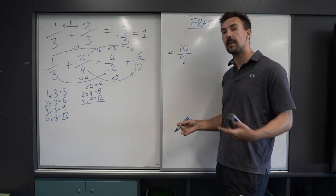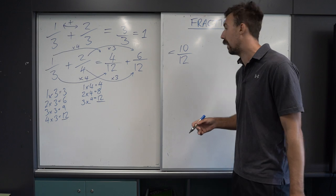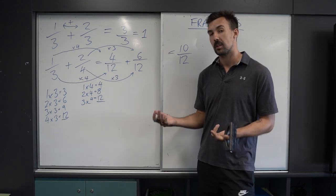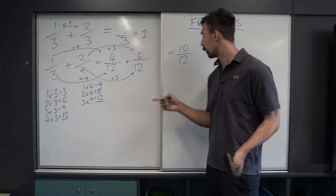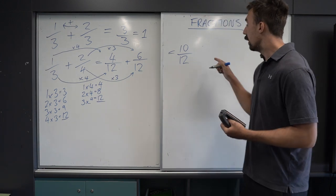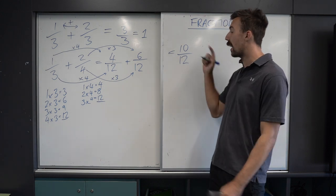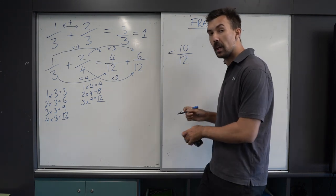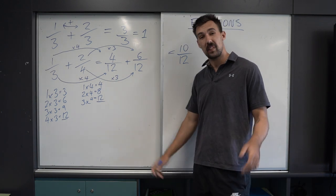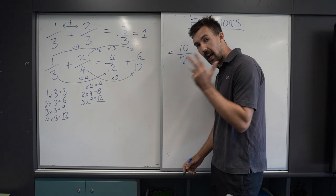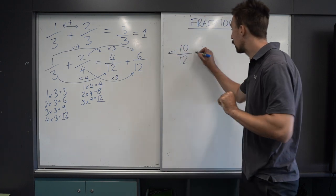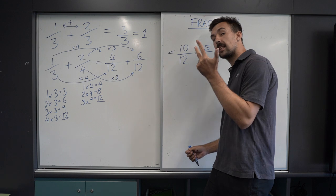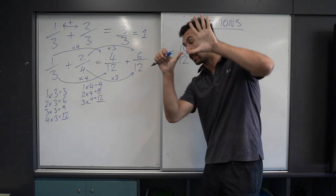Let's simplify 10 over 12. We need to make it into a smaller number. We don't use 1 because nothing changes. What about 2? Can 2 divide into 10? Yes, because 10 is an even number. Using our fingers: 2, 4, 6, 8, 10 — that's 5 times. So we have 5. What about 12? 2, 4, 6, 8, 10, 12 — that's 6 times. So 10 over 12 simplifies to 5 over 6.